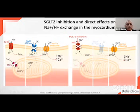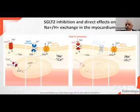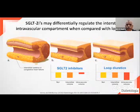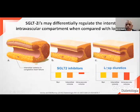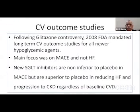Sodium-hydrogen exchange is impaired in heart failure, leading to increased sodium and calcium. With inhibition of this mechanism by SGLT2 inhibitors, sodium and calcium decrease in the cytosol, improving cardiac efficiency. Importantly, SGLT2 inhibitors — unlike loop diuretics — decrease interstitial edema while preserving the intravascular compartment. Loop diuretics predominantly affect intravascular volume causing vasoconstriction, whereas SGLT2 inhibitors target interstitial edema. This is beneficial because with loop diuretics, intravascular volume depletion activates the renin-angiotensin system, which is harmful in heart failure.